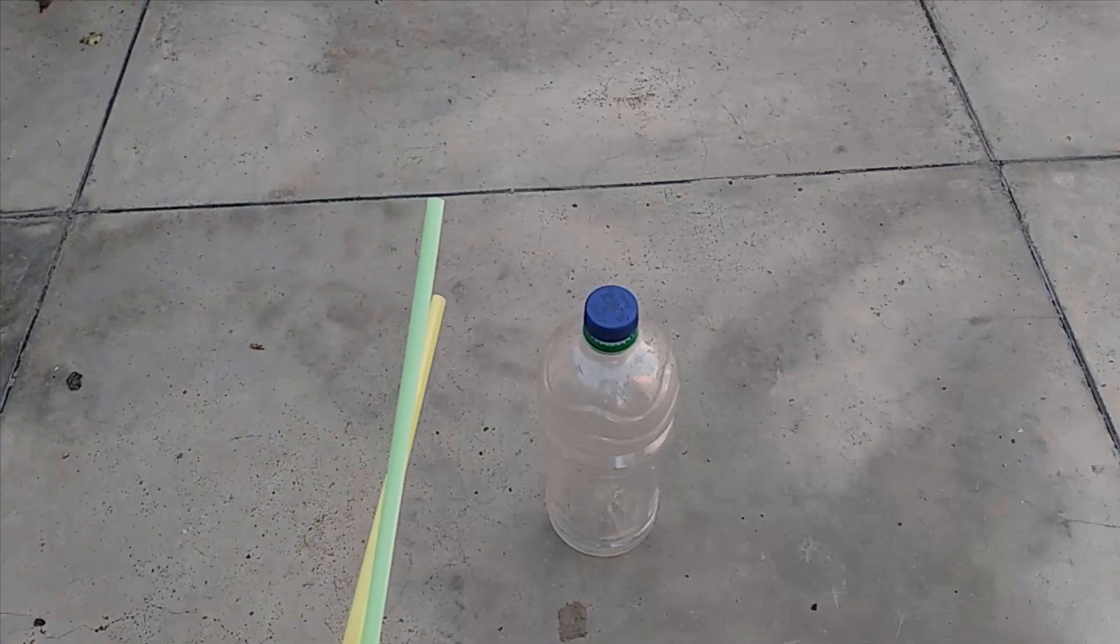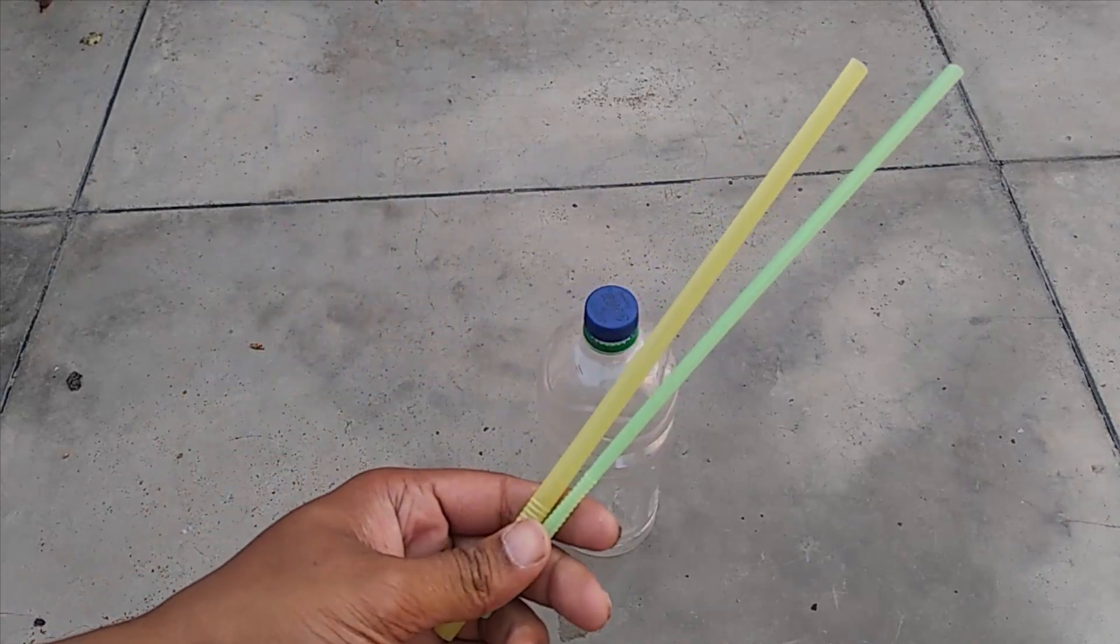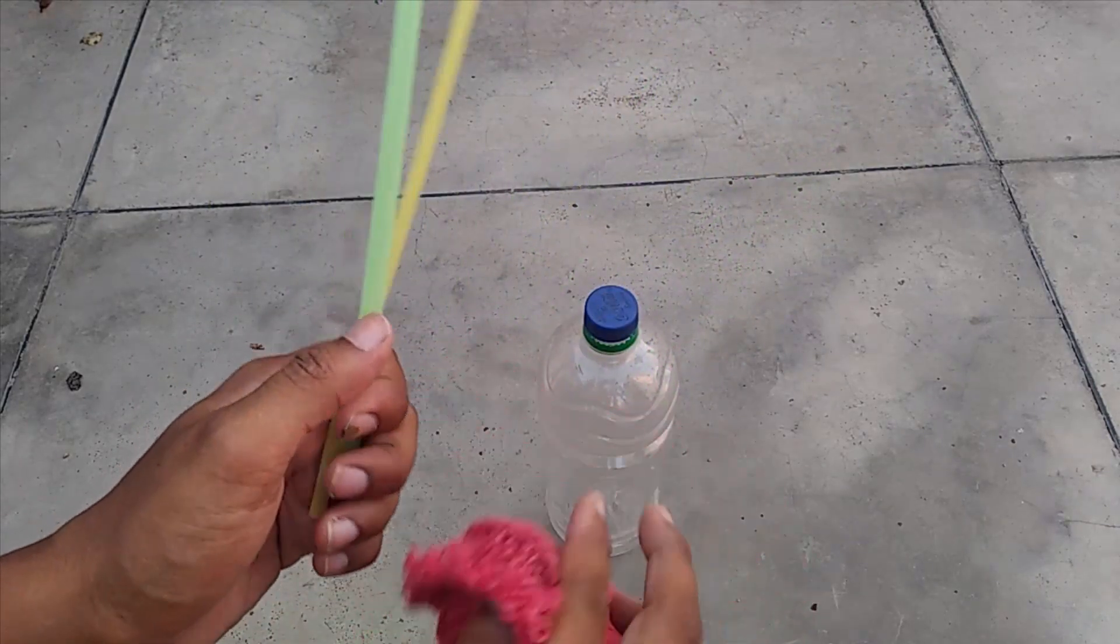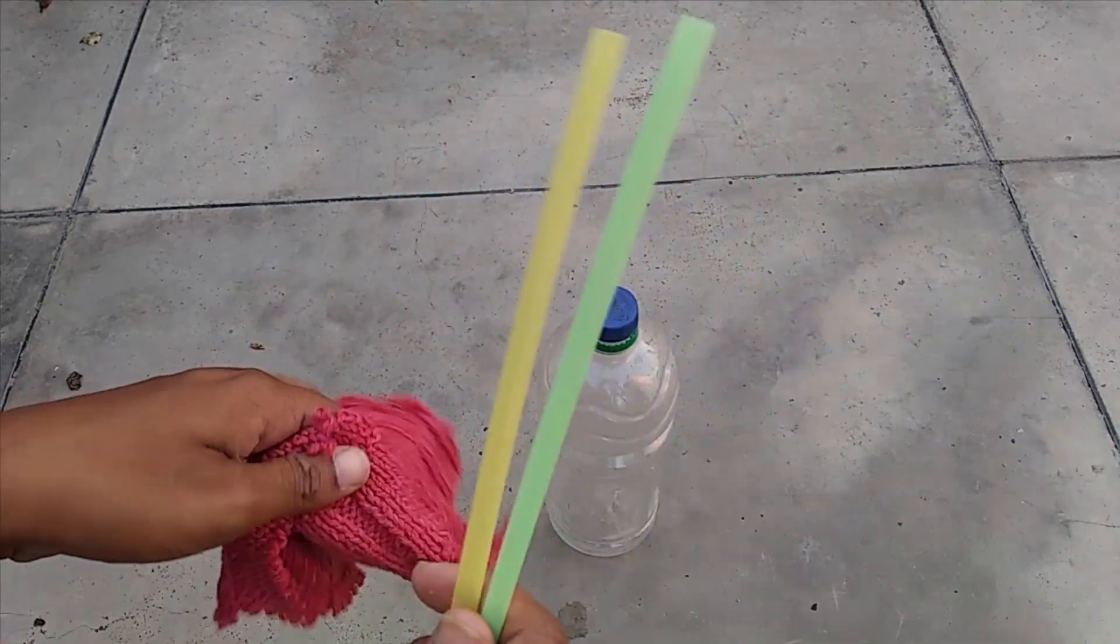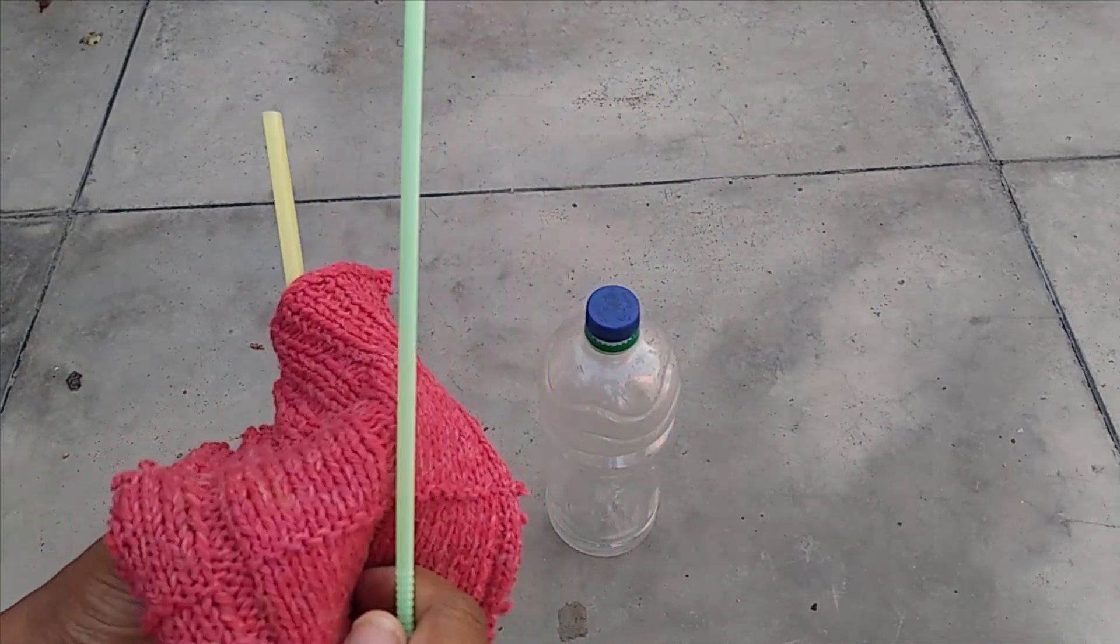Welcome to this second activity. For this activity you need a bottle, two straws, and the same woolen cloth. In this activity you can start discussing the nature of charges.